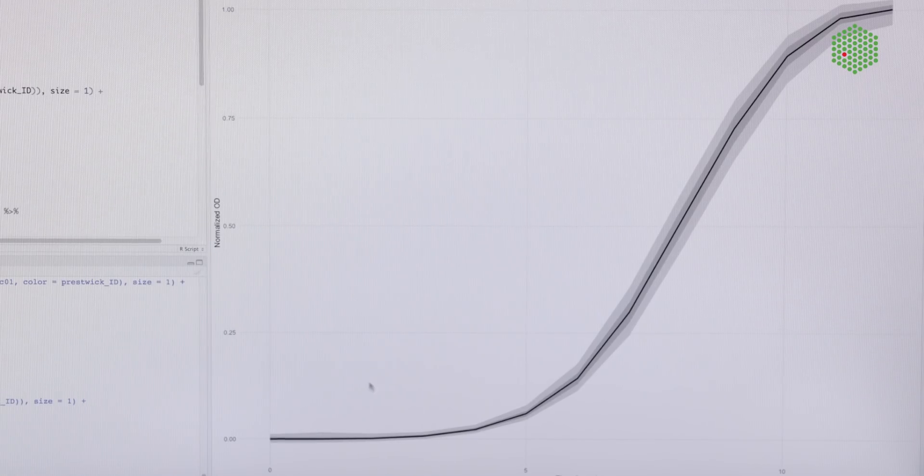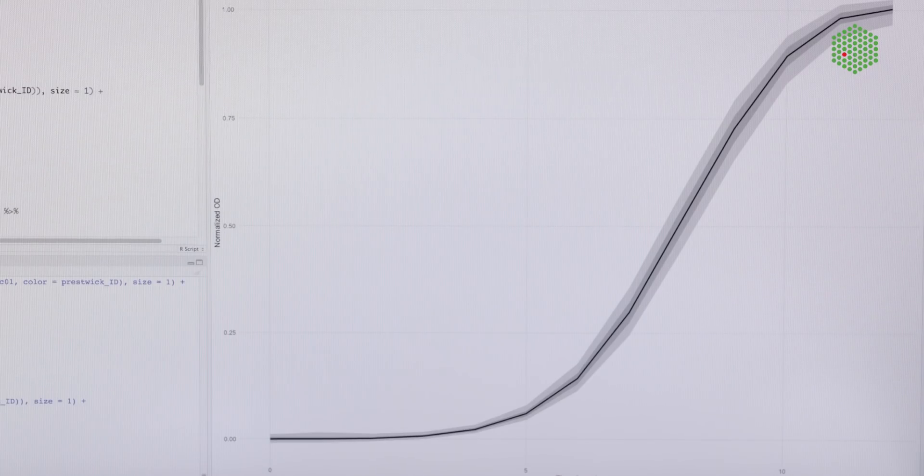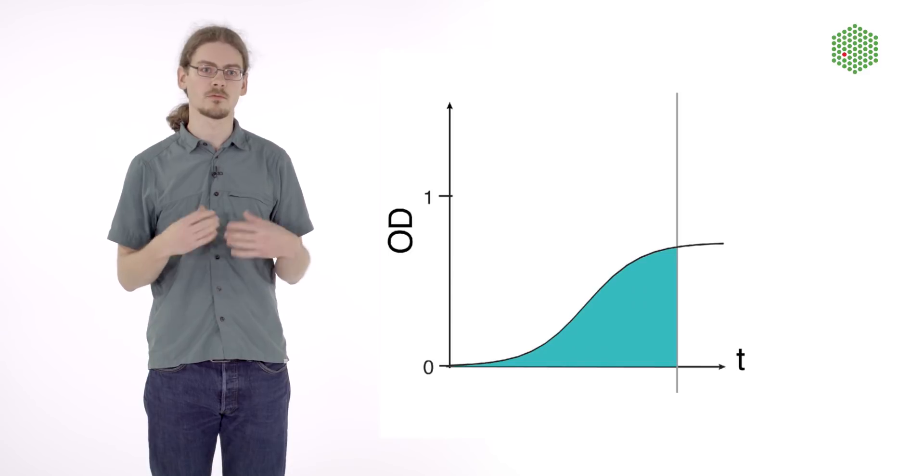As all the bacteria behave differently, we first have to define what normal growth is. To do this, we essentially take the integral under the growth curve, which gives us a convenient single number that we can use to quantify growth for each bacteria.